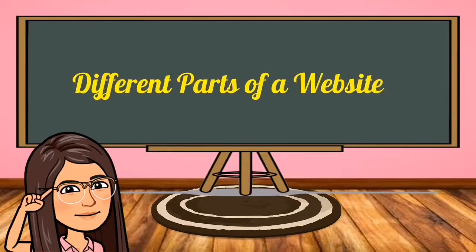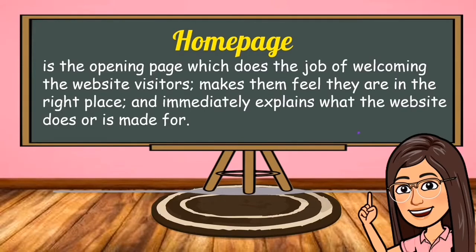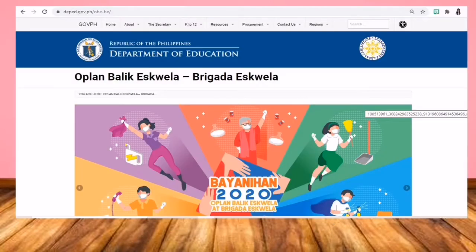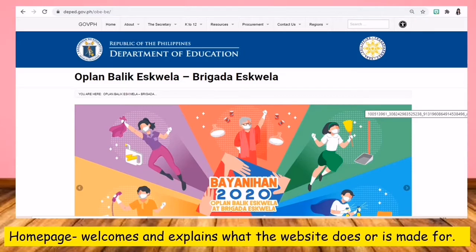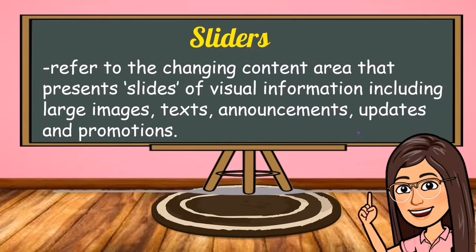Now, there are different parts of a website, and they are: number one, the home page. It is the opening page which does the job of welcoming the website visitors. It makes them feel they are in the right place and immediately explains what the website does or is made for. The second one is sliders. Sliders refer to the changing content area that presents slides of visual information including large images, texts, announcements, updates, and promotions.